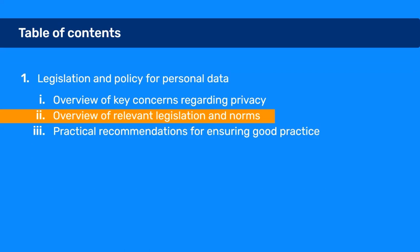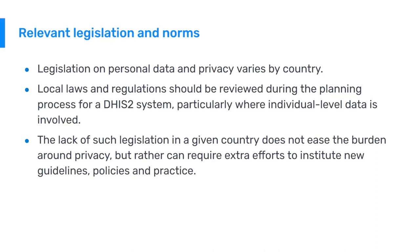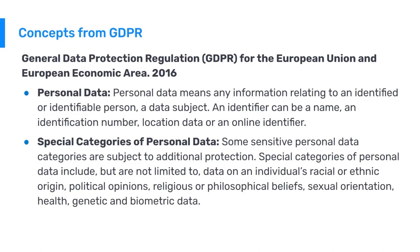Now we'll take a look at some of the relevant legislation and norms encountered when establishing a DHIS2 system. Legislation on personal data and privacy will vary by country. Local laws and regulations should be reviewed during the planning process, particularly where individual level data is involved. The lack of such legislation in a given country will not make this easier — it would be a burden on those implementing the DHIS2 system to take extra steps to institute new guidelines, policies, and practice. We'll look at key concepts from GDPR, the General Data Protection Regulation for the European Union and European Economic Area.